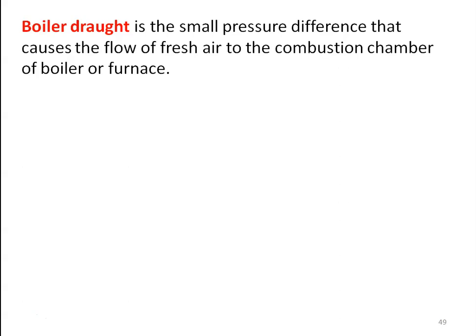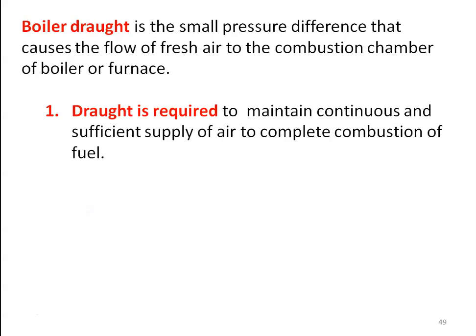Boiler draught is defined as the small pressure difference that causes the flow of fresh air to the combustion chamber of the boiler or furnace. We require air for combustion, and the air is supplied to the boiler by means of draught. The draught is created by the pressure difference between the atmospheric air and the pressure of the gases inside the combustion chamber. The draught is required to maintain continuous flow of sufficient air supply to complete combustion of the fuel.